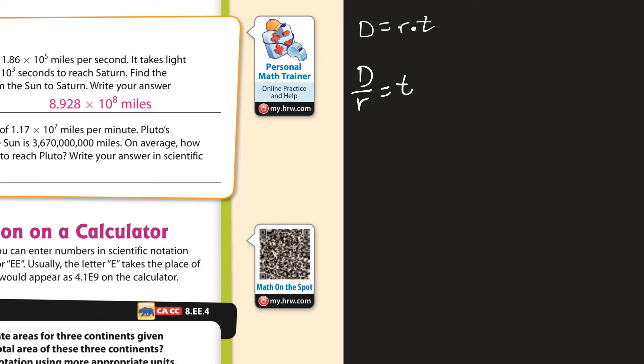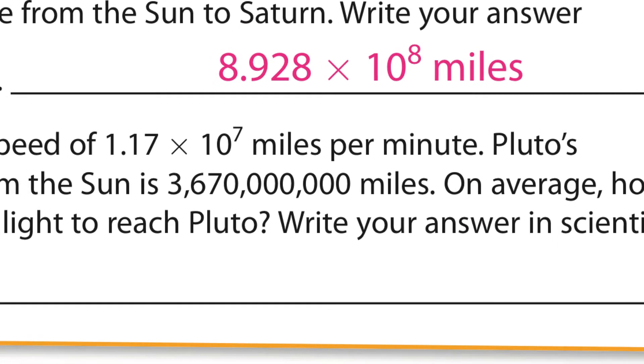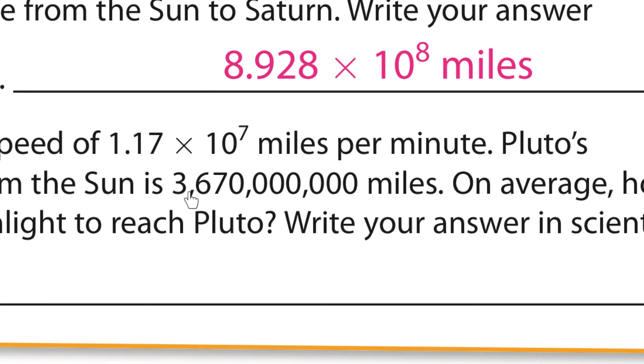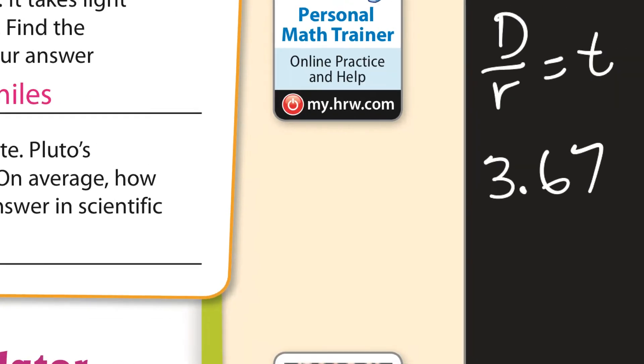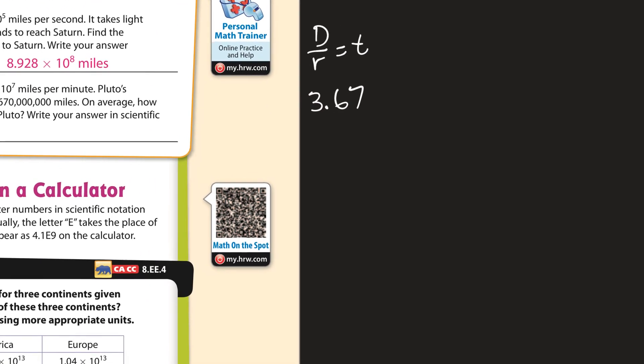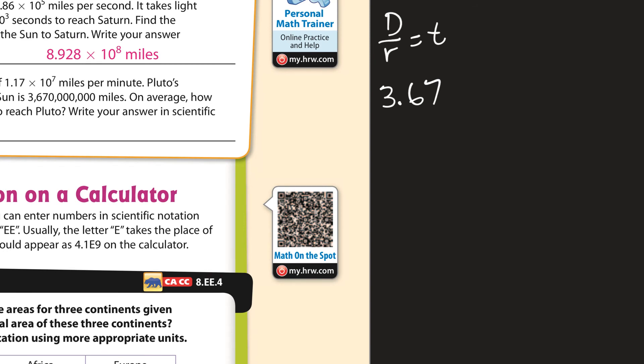So the distance is 3.67. What I'm doing is I'm eyeing this right here. And so I'm going to write this in scientific notation. So I put the decimal there. So it's going to be 1, 2, 3, 4, 5, 6, 7, 8, 9 times 10 to the 9th. 3.67 times 10 to the 9th. That's the distance divided by the rate, which is 1.17 times 10 to the 7th. Okay.